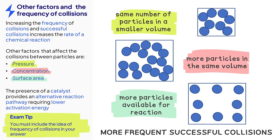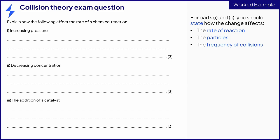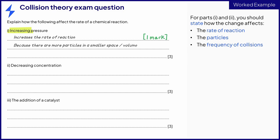Apart from catalysts, your answers should always talk about the frequency of collisions. Your answer should cover the rate of reaction, the particles, and the frequency of collisions. Applying this to part one, which is about increasing pressure: this will increase the rate of reaction for one mark; this is because there are more particles in a smaller volume for the second mark; and this leads to more frequent successful collisions for the third mark.